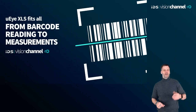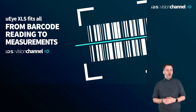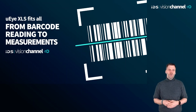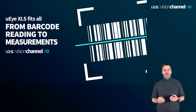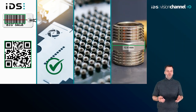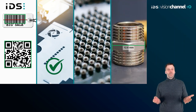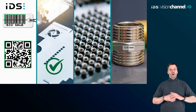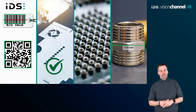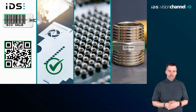Now let's start and dig into the topic: from barcode reading to measurements. The UIXLS fits all. Today I want to show you our brand new small board level and also available as housed versions UIXLS camera. We want to talk about possible applications and features. From code reading over automated or visual quality inspection up to measurement applications. Due to the broad range of sensors, housing formats and still the small size, the UIXLS camera is the choice when it comes to price-sensitive but still high quality applications.